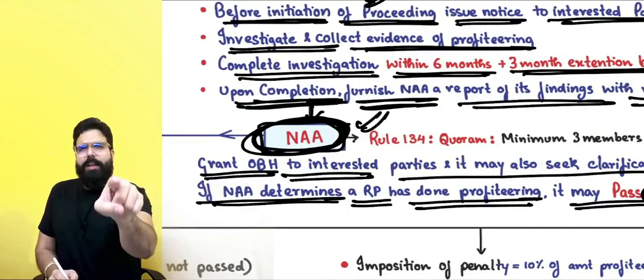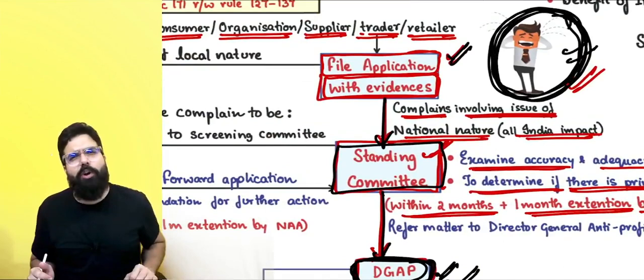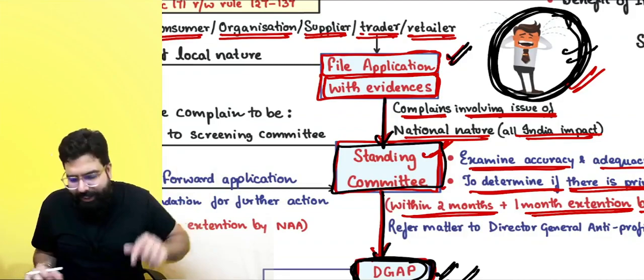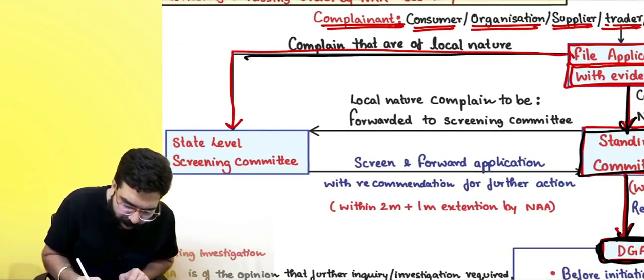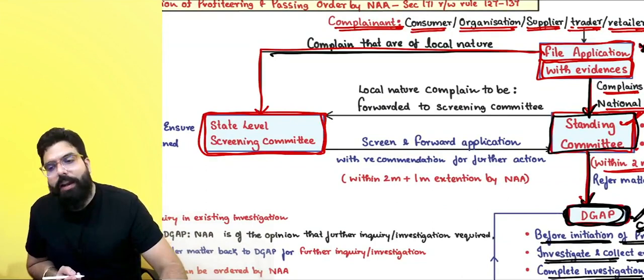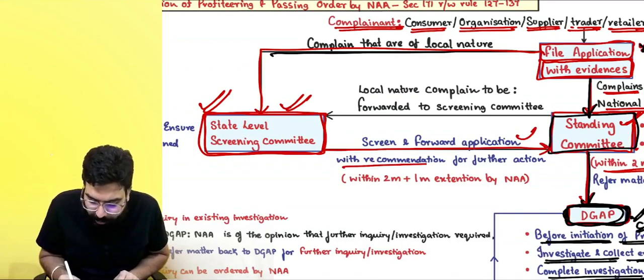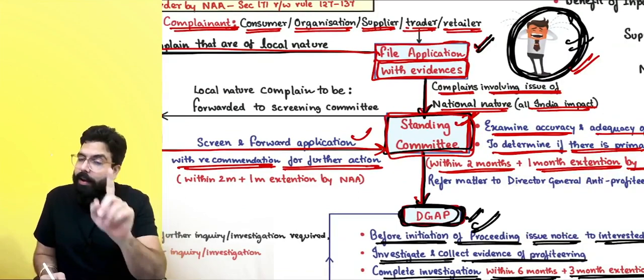If the complaint is of local nature — a person supplying goods only within a state — do not go to the standing committee. Go to the state-level screening committee instead. A complaint of national nature goes directly to the standing committee; a complaint of local nature first goes to the state-level screening committee, who will screen and see whether the complaint is genuine and details are provided correctly.